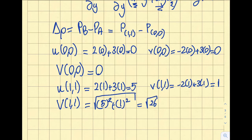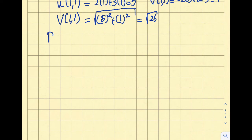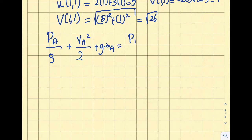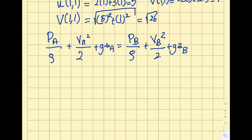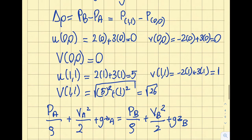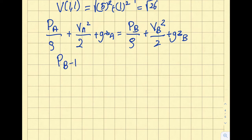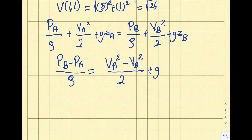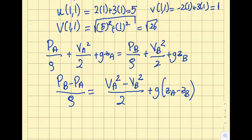Bernoulli's equation is: p_A/ρ + V_A²/2 + gz_A = p_B/ρ + V_B²/2 + gz_B. Rearranging for p_B − p_A: (p_B − p_A)/ρ = (V_A² − V_B²)/2 + g(z_A − z_B). Substituting values: V_A = 0 and V_B² = 26, giving (V_A² − V_B²)/2 = −13.